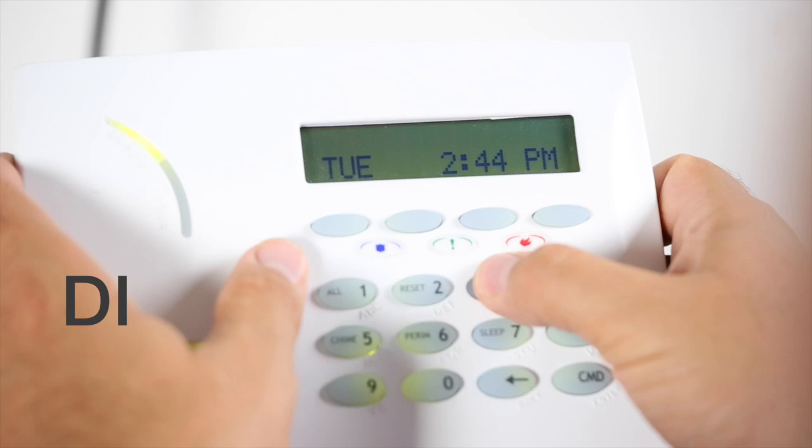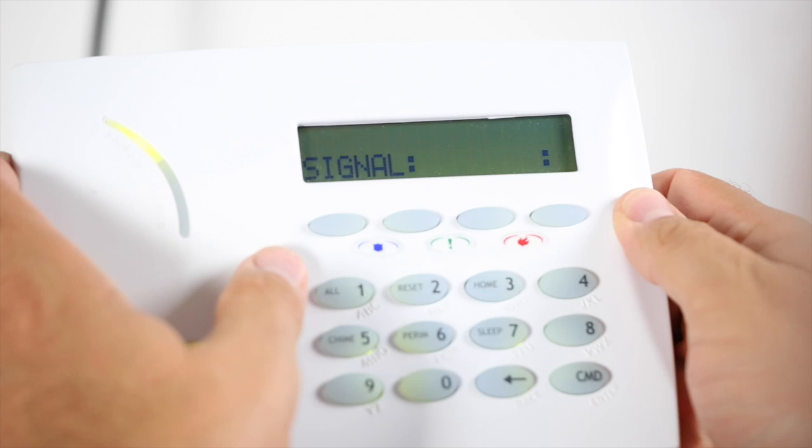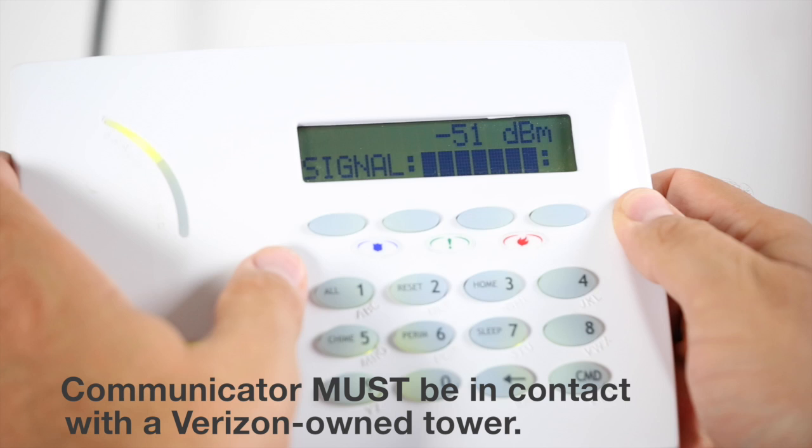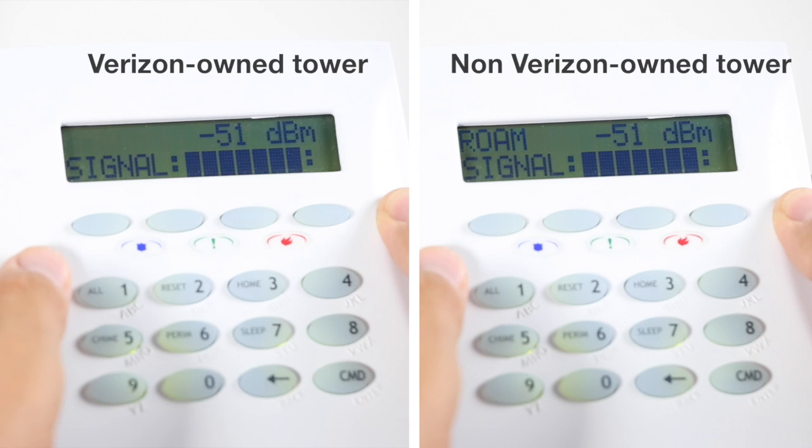In order to test the cellular signal strength from the diagnostics menu, access the cell signal menu option and press the top row select key to display cell signal strength. The keypad activation process requires that the communicator must be in contact with a Verizon owned tower. In the event you are not in contact with a Verizon owned tower, ROAM will display on the keypad.